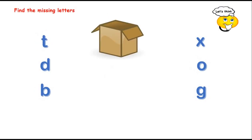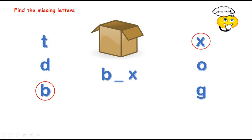Okay, let's find the missing letters. Let's think. Now it's practicing time. Look at the picture. What can you see in the picture? It's a box. Let's remember the letters of the word box. B. This is the missing letter. What is the missing letter? Let's think. Okay, what's the missing letter? O is the missing letter. B, O, X. Box. It's a box.